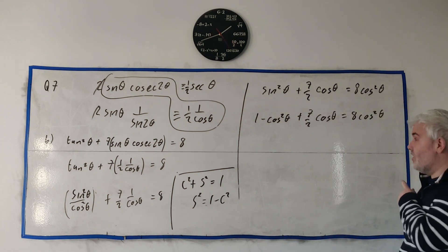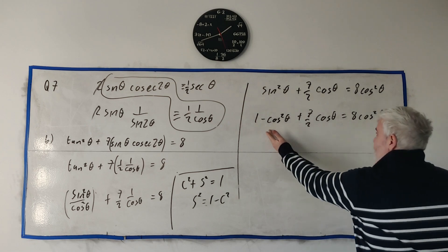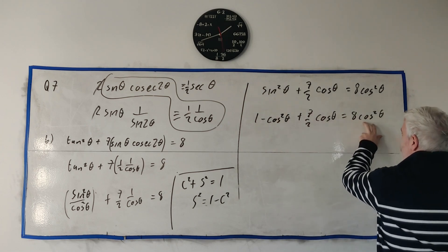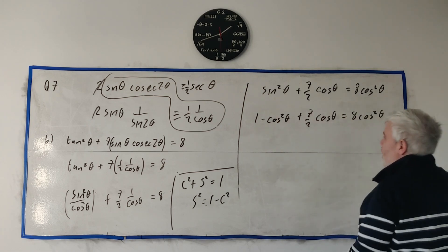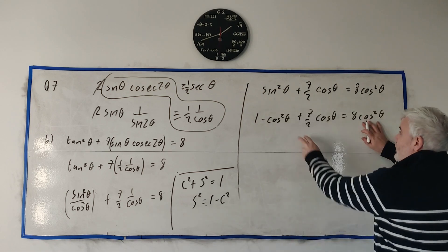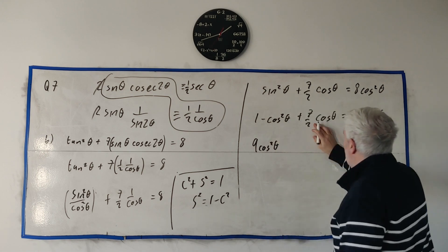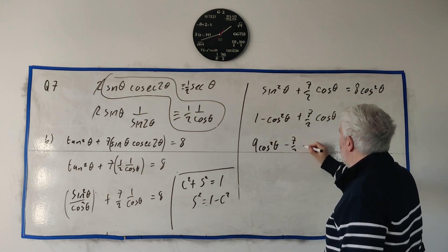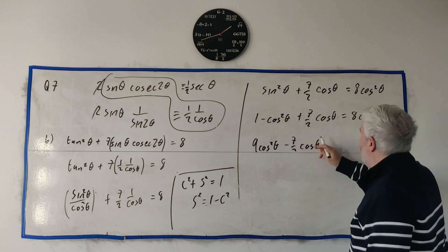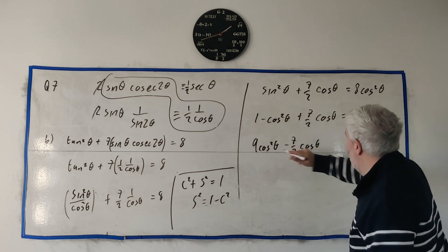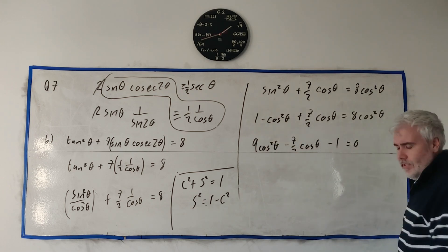That means if we ever want to change one of these, sine squared is just equal 1 minus cosine squared. So let's replace that. That's 1 minus cosine squared plus 7 over 2 cosine θ is equal 8 cosine squared θ.